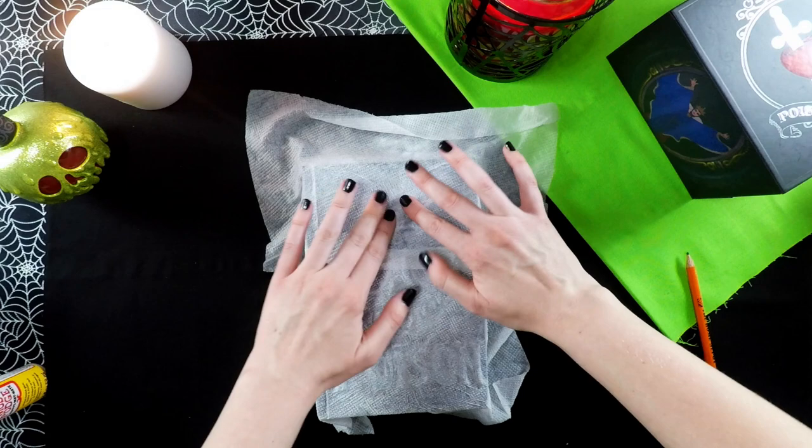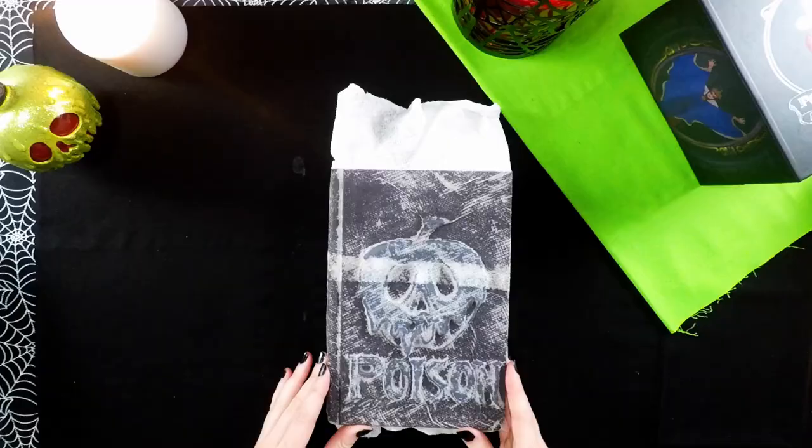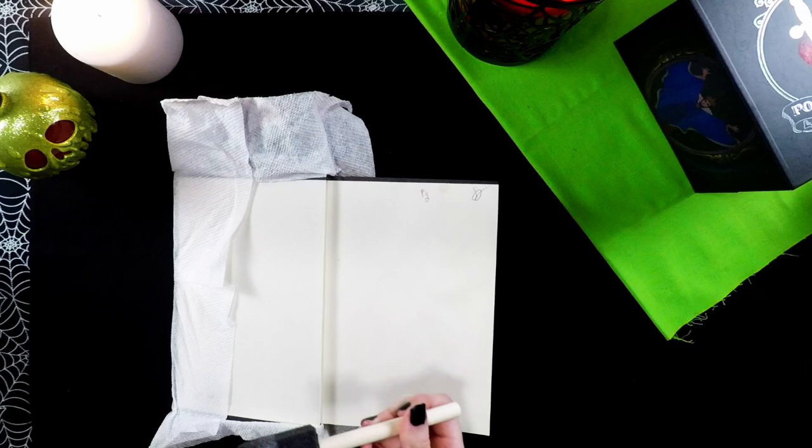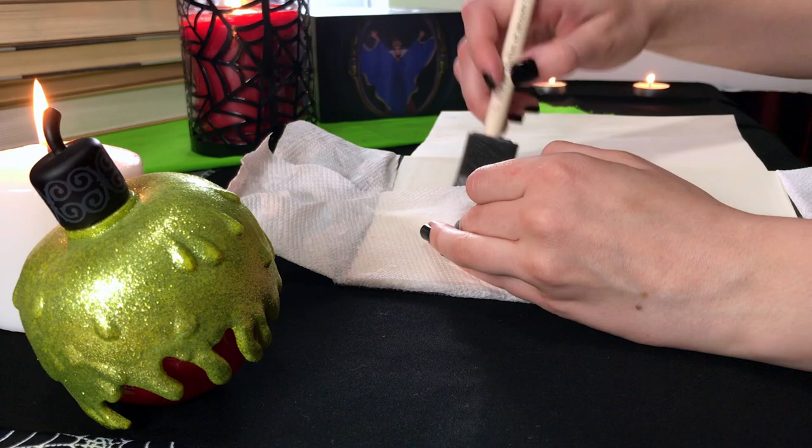Next I'm just repeating that same process for the top half of the book. Now that the layer of Mod Podge and paper towel have dried I'm going back in on the inside of the cover and repeating the same process.